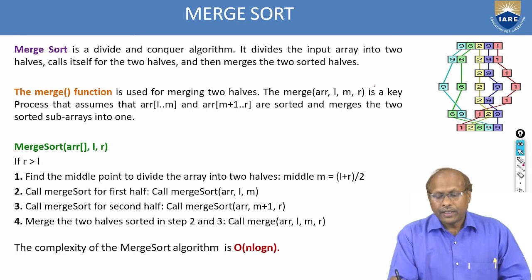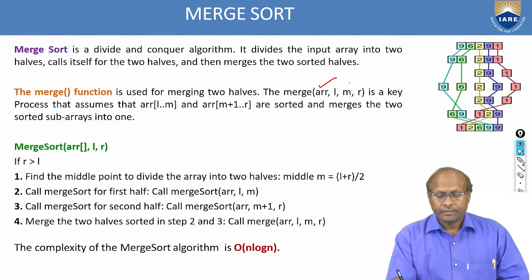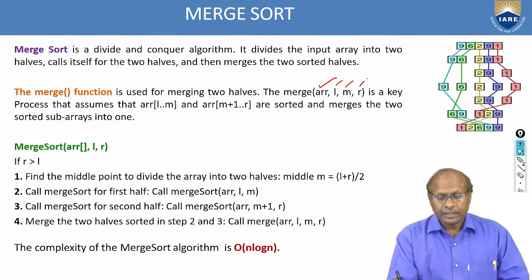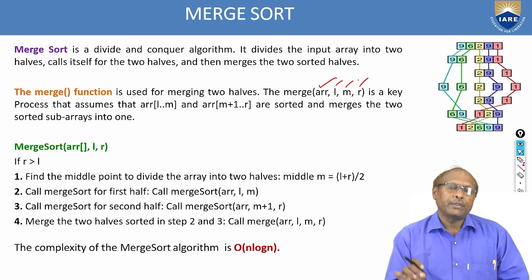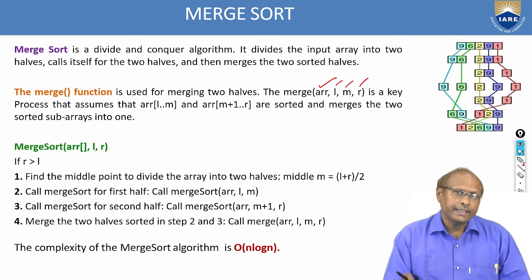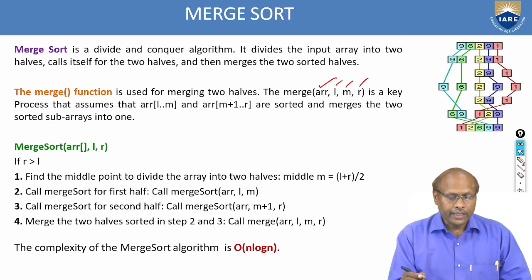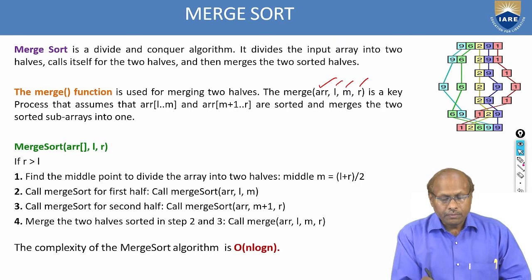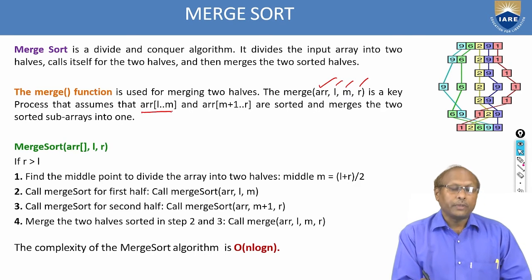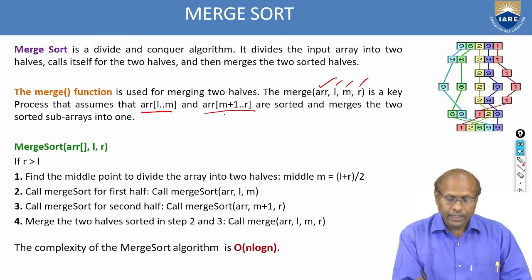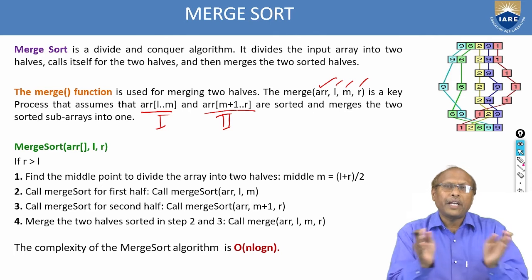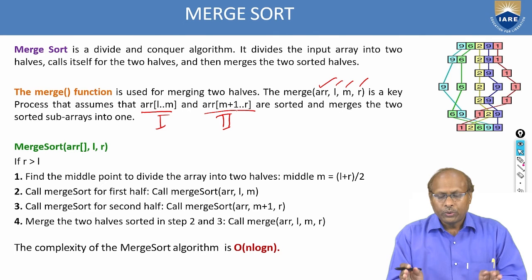The merge function takes four parameters: the original array, the left index, middle index, as well as the right index. You should get left, middle, and right index — which is a key process to assume that array left to middle, and middle plus one to right means this is first half, this is the second half. This will keep on dividing into two halves.